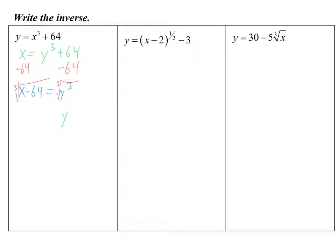If you start with a cube, you're going to end with a cube root. If you start with a second power, you're going to end with a second root called a square root. Whenever you take an inverse, you're going to kind of flip-flop the power type.